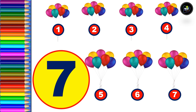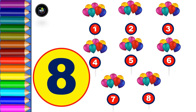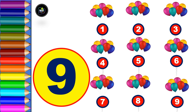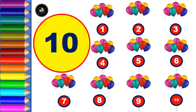Next, eight: one, two, three, four, five, six, seven, and eight — total eight bunches of balloons. Next, nine: one, two, three, four, five, six, seven, eight, and nine — total nine bunches of balloons. And next, ten: one, two, three, four, five, six, seven, eight, nine, and ten — total ten bunches of balloons.